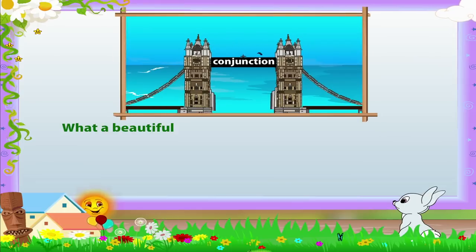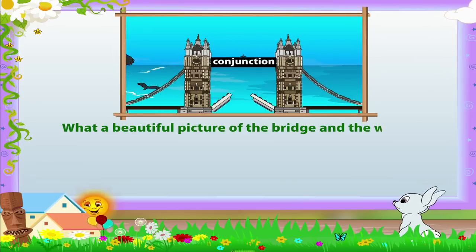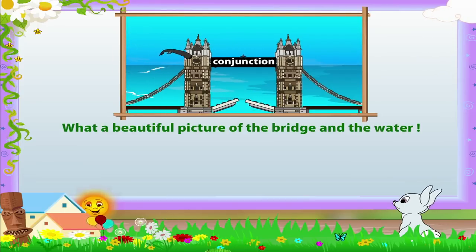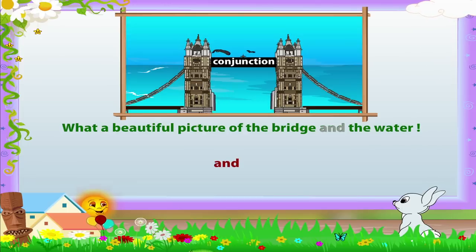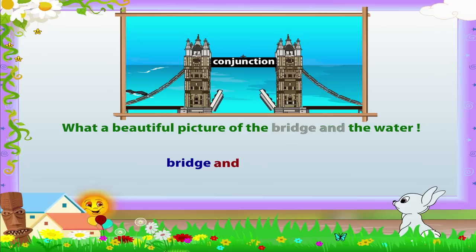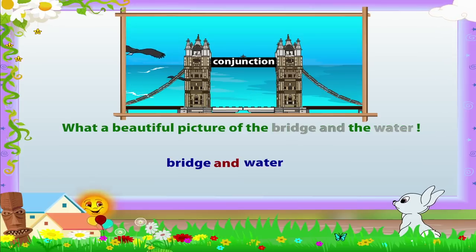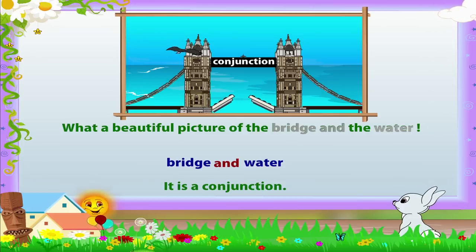What a beautiful picture of the bridge and the water, Rainbow! The word 'and' is used to join the words 'bridge' and 'water.' It is a conjunction.